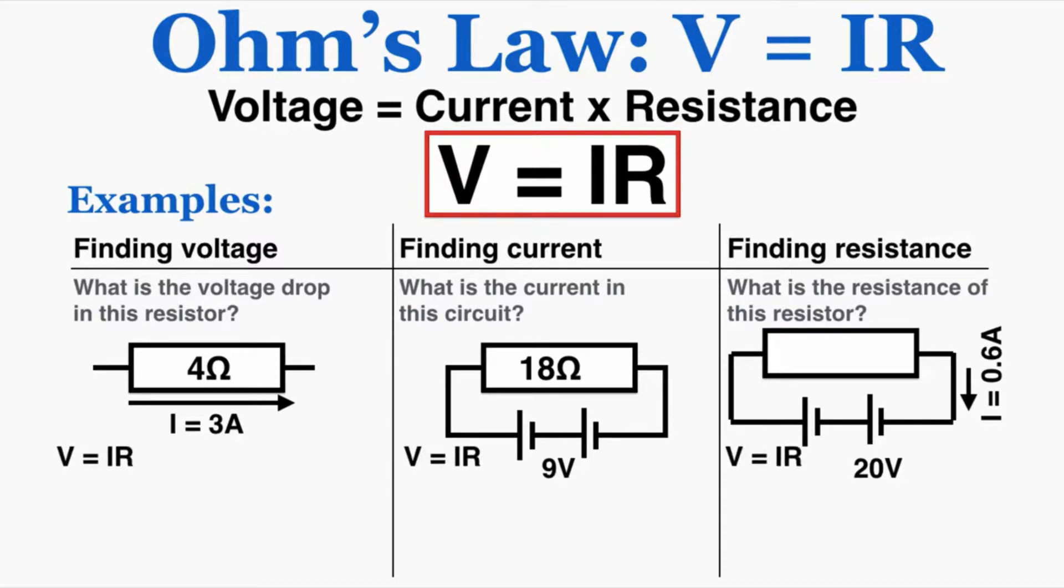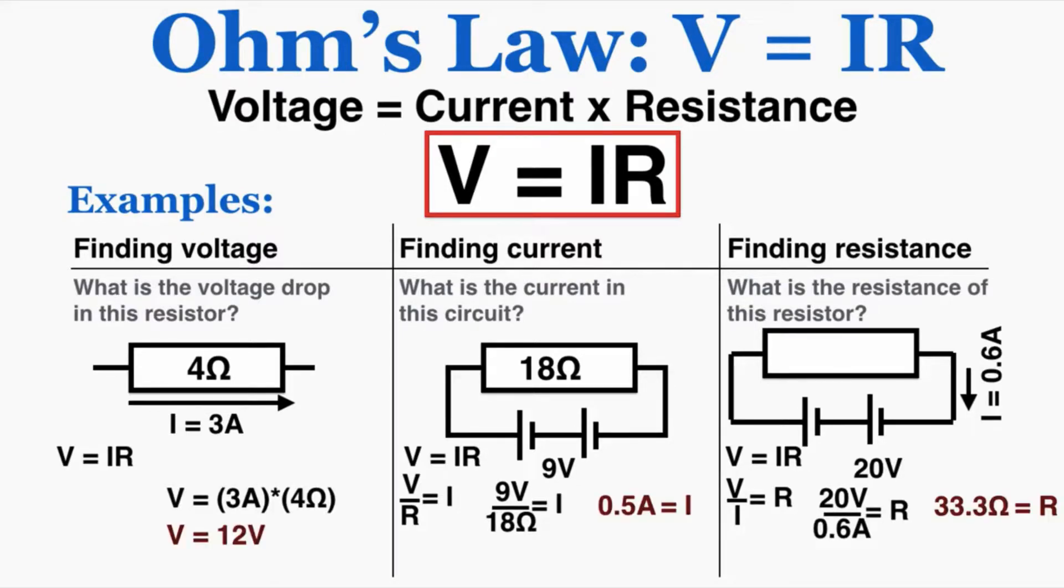For all three of these, we can just use V equals IR, rearrange them to find the variable that we're looking for, plug in the numbers that we're given, and find the answer.